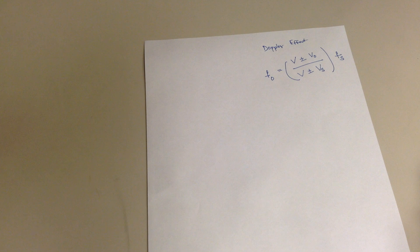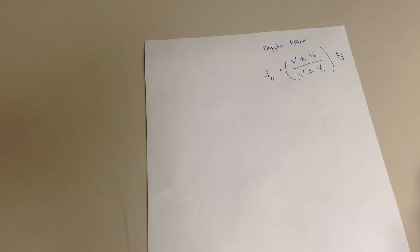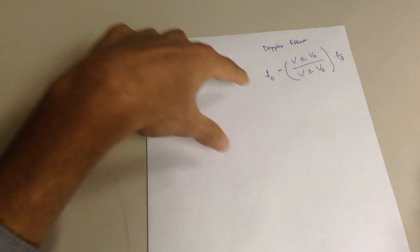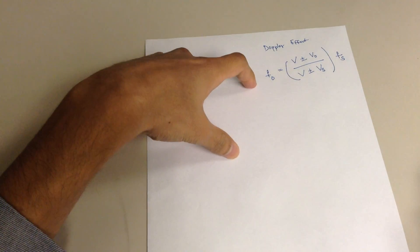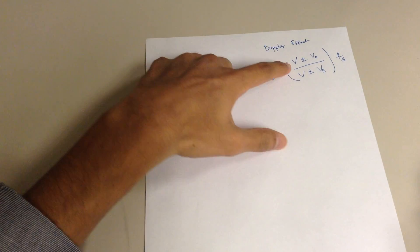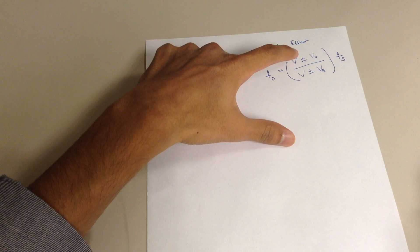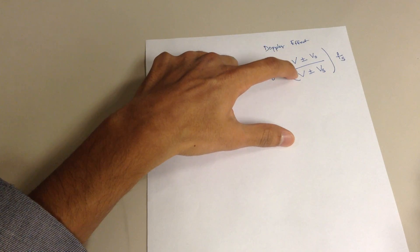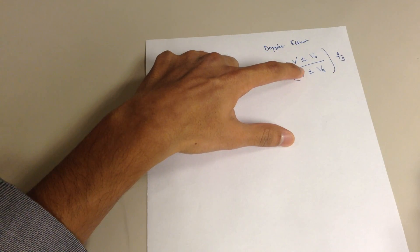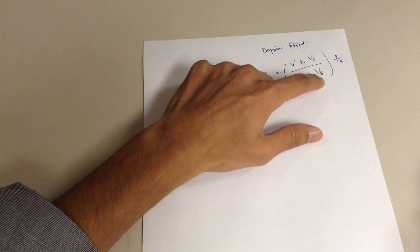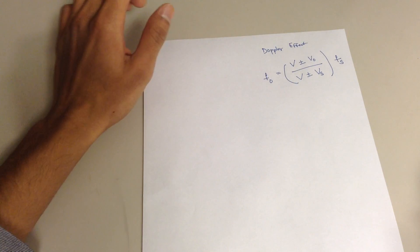Hello, everyone. In this video, I'm going to talk a little bit about the Doppler effect. I've written down the formula already. It's the frequency of the observer is equal to velocity of the sound plus or minus velocity of the observer, over velocity of the sound plus or minus velocity of the source, times the frequency of the source.